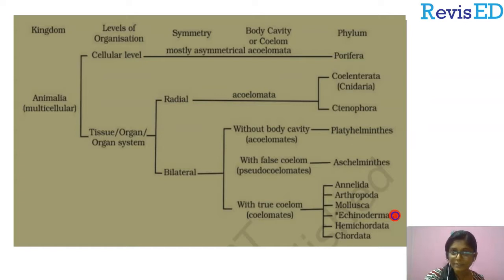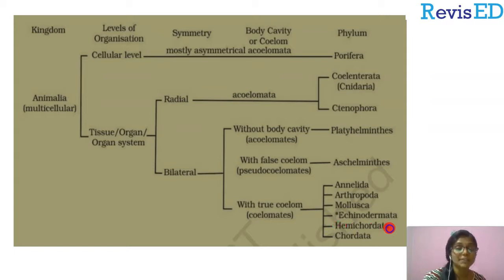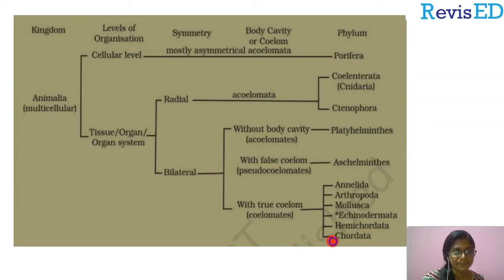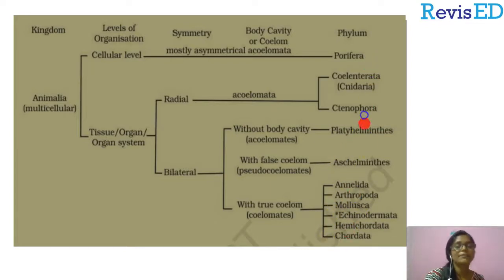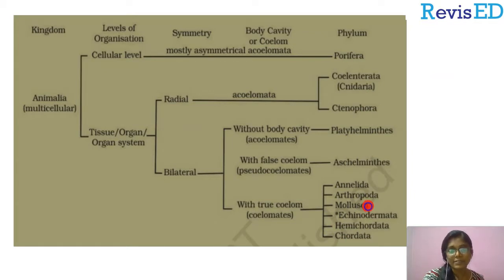Echinodermata includes starfishes. Then there is Phylum Hemichordata, and the final phylum is Chordata. In this chapter, we are going to discuss all these phyla, their common features, and examples.